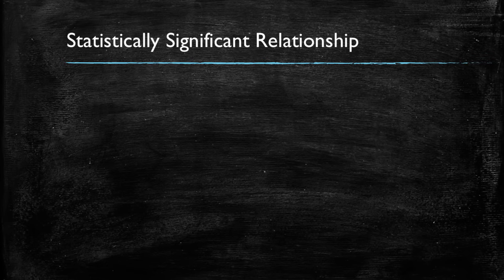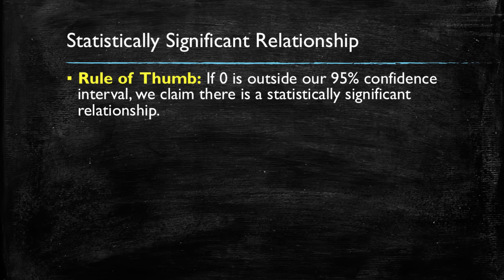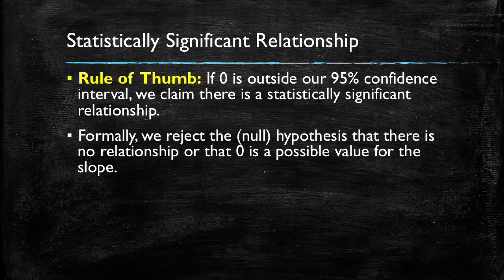So what we want to show is that there is a relationship — meaning the coefficient for income, the independent variable, is not zero. If that coefficient is not zero, we can claim there is a statistically significant relationship. A very easy rule of thumb: if zero is outside of our 95% confidence interval, then there is a statistically significant relationship. Formally, we're rejecting the null hypothesis that there is no relationship — that zero is a possible value for the slope. We're 95% sure that zero is not a possible value for the coefficient.